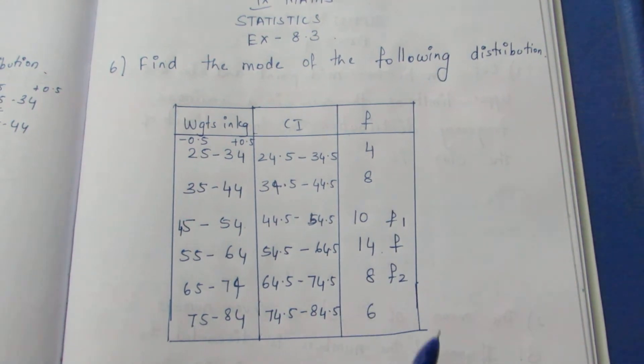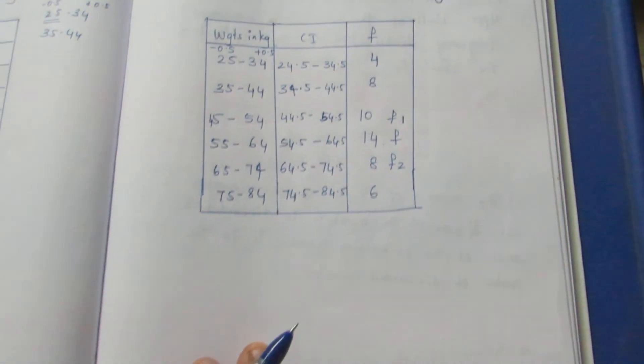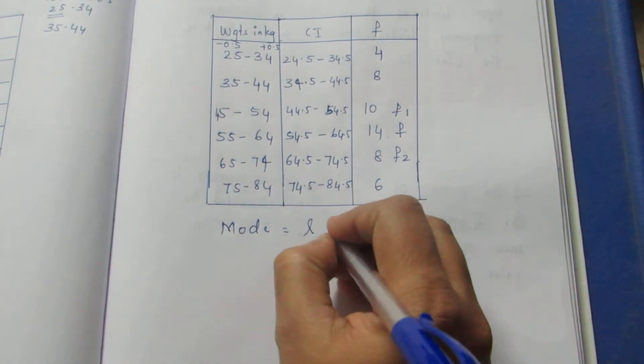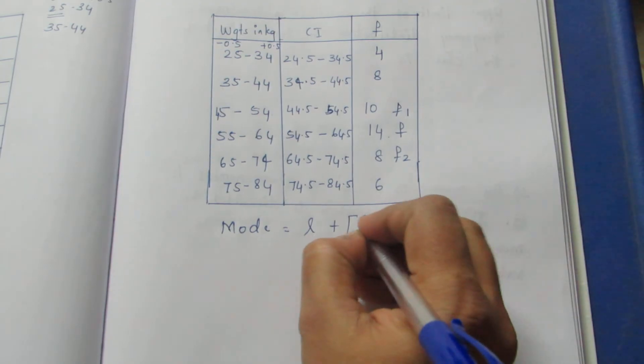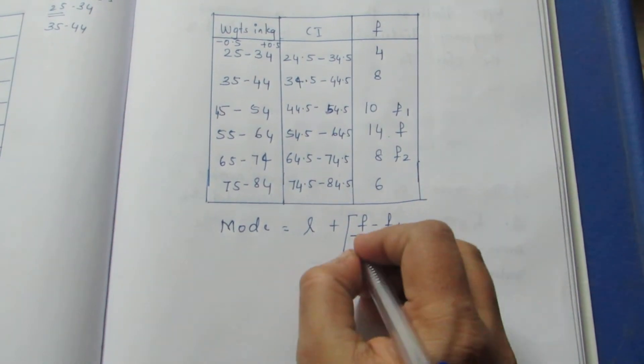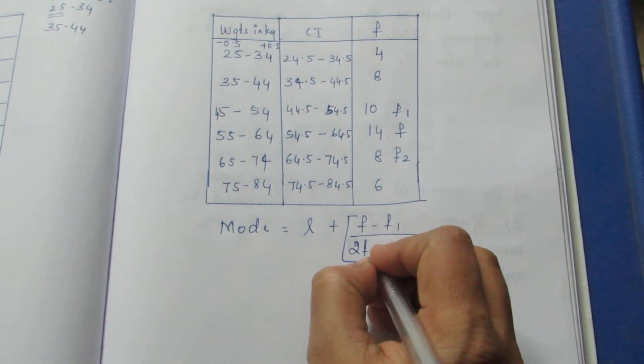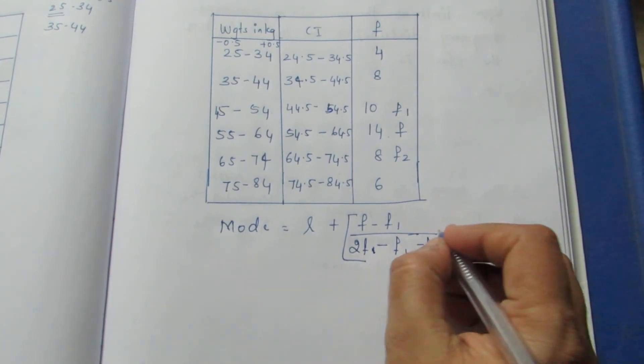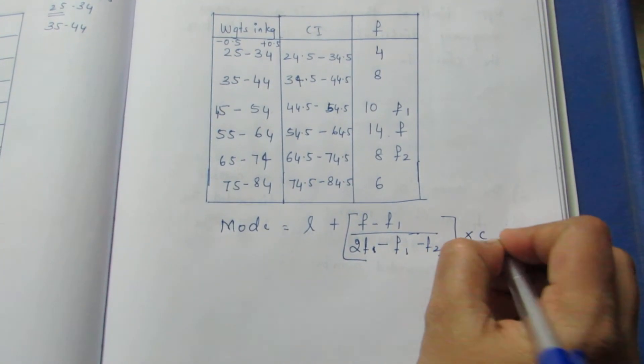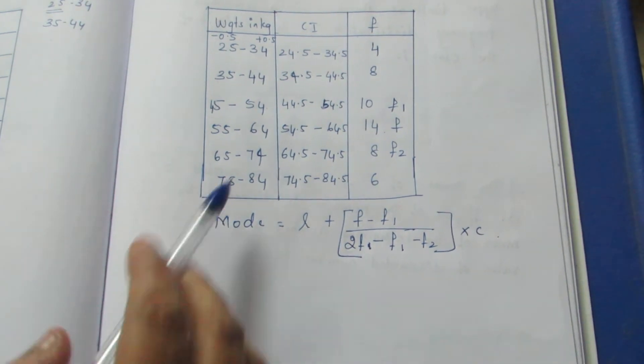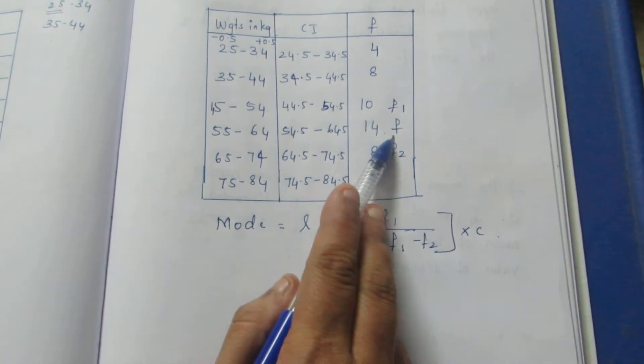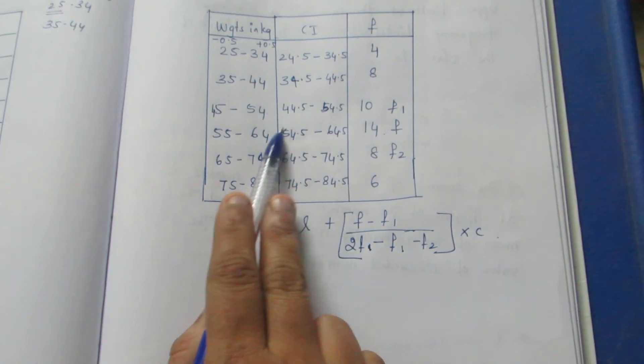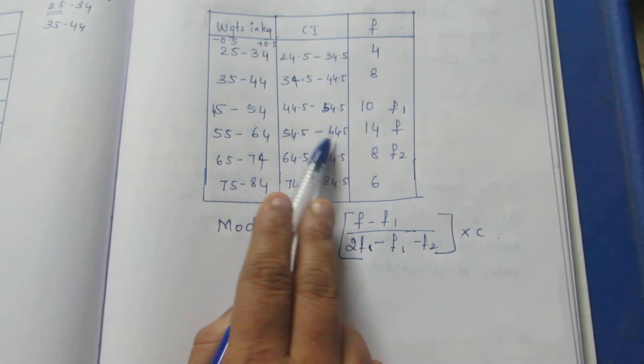If we write the formula, Mode is equal to L plus F minus F1 by 2F minus F1 minus F2 into C. The C is the difference. This is one difference we do. The L is lowest term. Lower limit is 54.5.